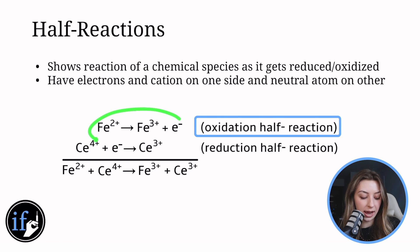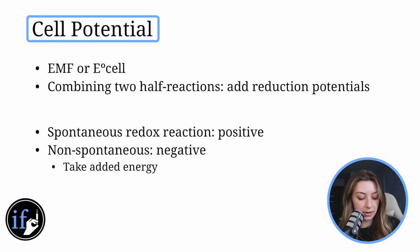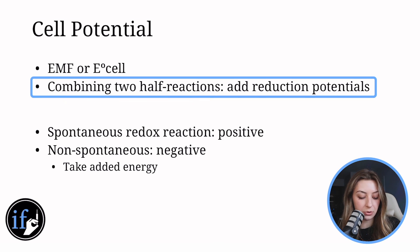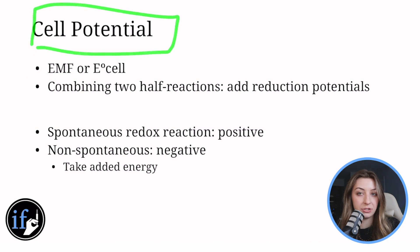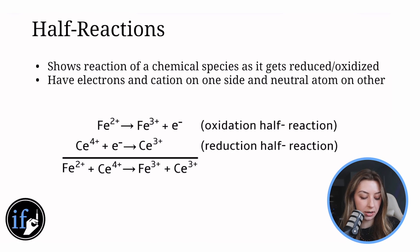So then you can take these two half reactions and figure out the cell potential of this entire reaction, and that's what we're going to talk about next. So again, this is combining the two half reactions and we're going to be adding the reduction potentials. The way this will be written out is as EMF or E° of the cell and that is the entire cell potential. So I'm going to put some random numbers up here. Say that the reduction potential for this half reaction is going to be positive four and the oxidation half reaction for this is going to be positive one, and so the cell potential of this entire equation right here would be positive five.